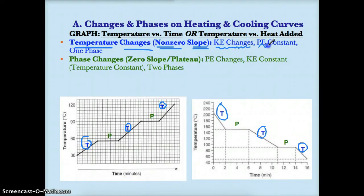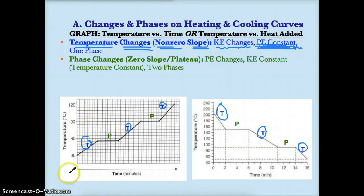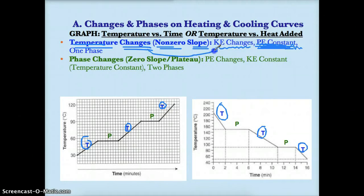Since only the temperature is changing and the phase is not changing, the potential energy is constant. We'll go into why the phase doesn't change in a moment. Just notice that only the temperature changes during these areas of non-zero slope — whether pointing upwards or downwards. So if the slope is non-zero, you have temperature changing somehow, and because temperature changes, kinetic energy changes in relation to that.